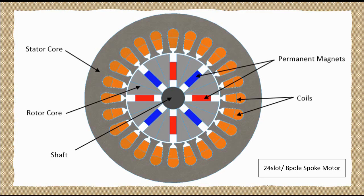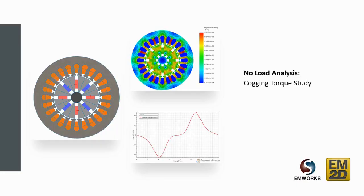Hello, this video is part of a series of five videos in which we will compute the performance of a 24-slot, 8-pole spoke motor using the transient magnetic solver of EAMORX2D. In this part, we will learn how to perform the no-load cogging torque analysis using the transient magnetic solver of EAMORX2D for SOLIDWORKS software.